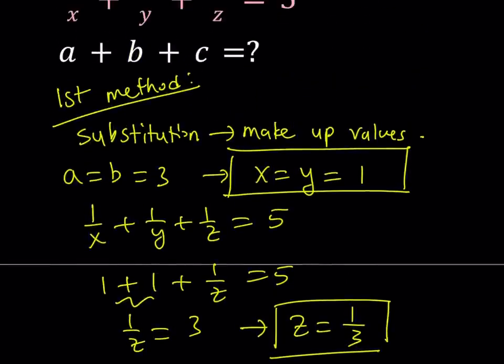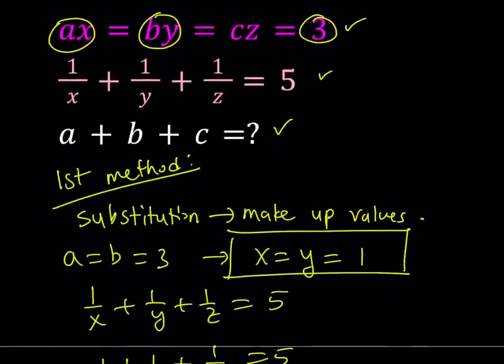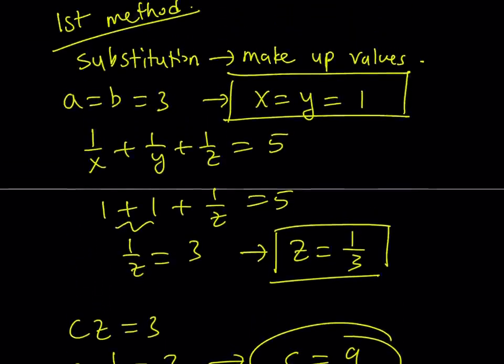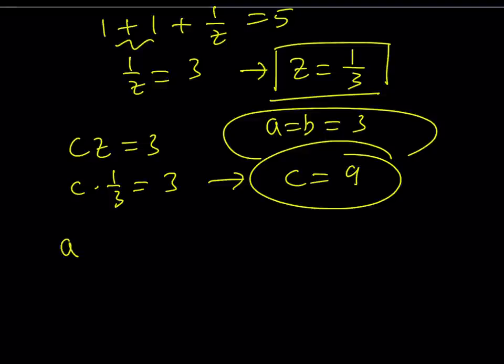So now I got the values of X, Y, and Z. But the question is finding A plus B plus C. But I already have A and B, so all I have left is finding C. But I do know that CZ is equal to three. And if Z is equal to one third, C times one third is equal to three. This implies that C equals nine. Great. So now I have A equals B equals three and C equals nine. And I'm supposed to find A plus B plus C, which is equal to three plus three plus nine. And that is equal to 15.